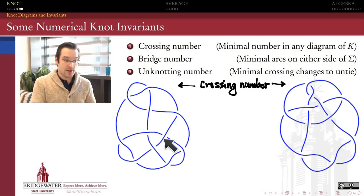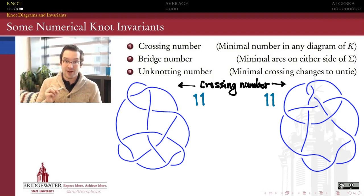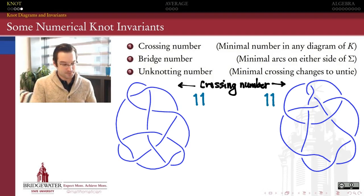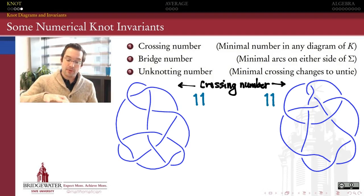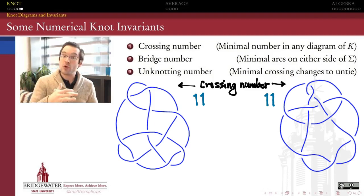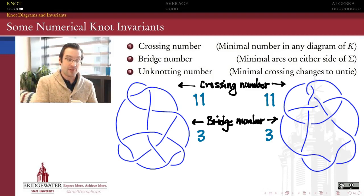Can the crossing number tell these two knots apart? If we believe these are the simplest diagrams for each knot, we just count crossings — and each of them has 11 crossings. Because they have the same crossing number, that invariant is not enough to tell them apart. The bridge number — the minimal number of arcs existing on either side of the hyperplane for the right choice of hyperplane — is also three for both of these knots, so that invariant too is not powerful enough to distinguish them.